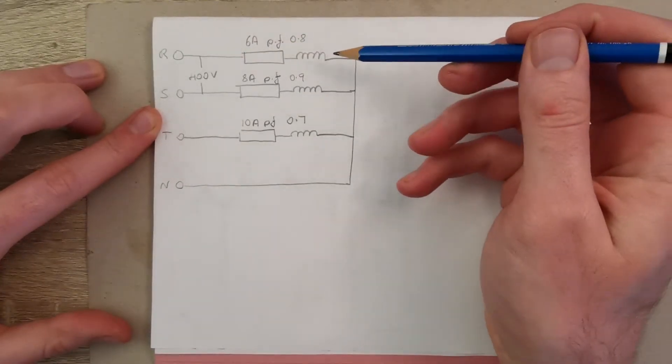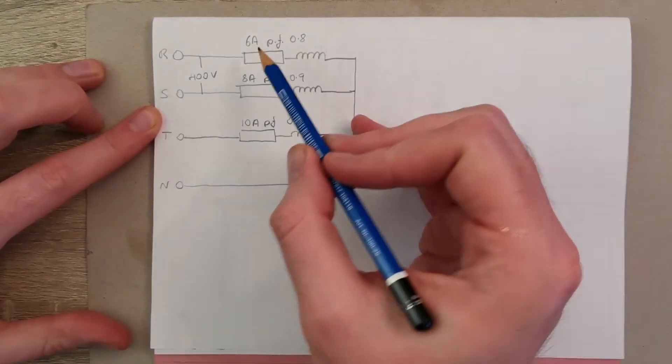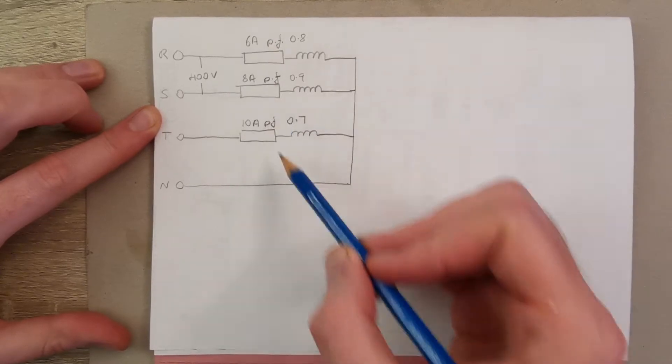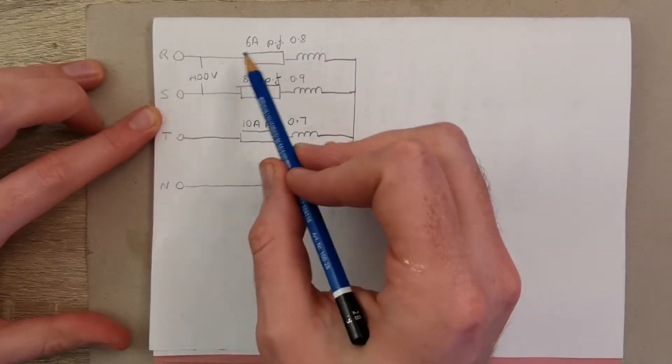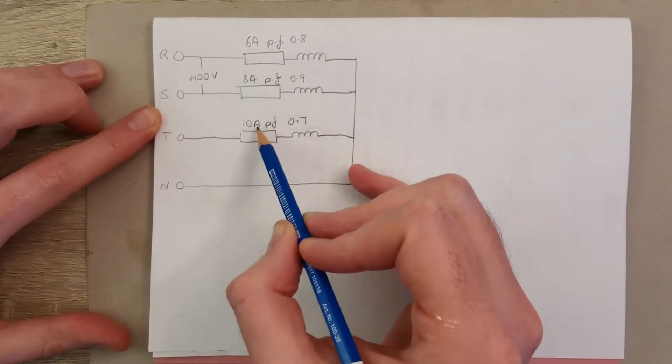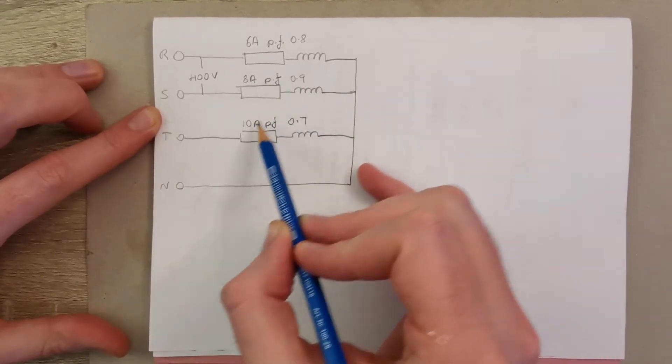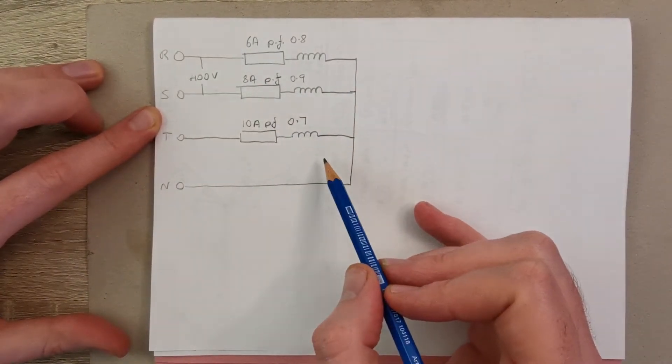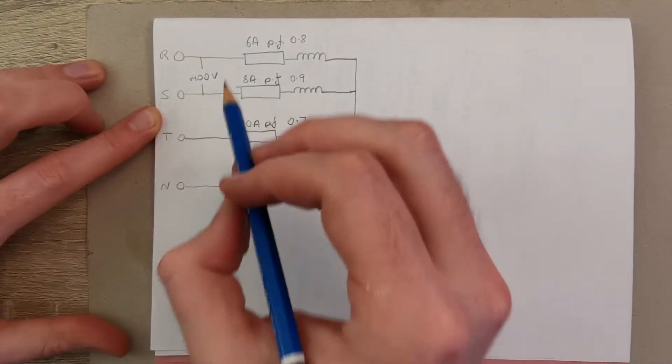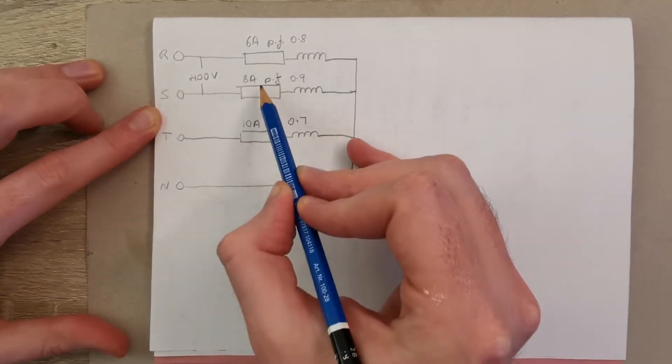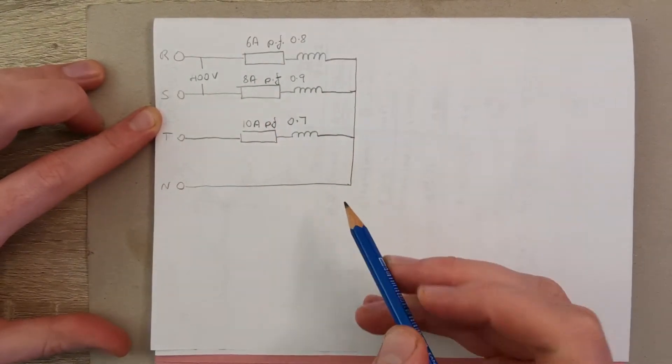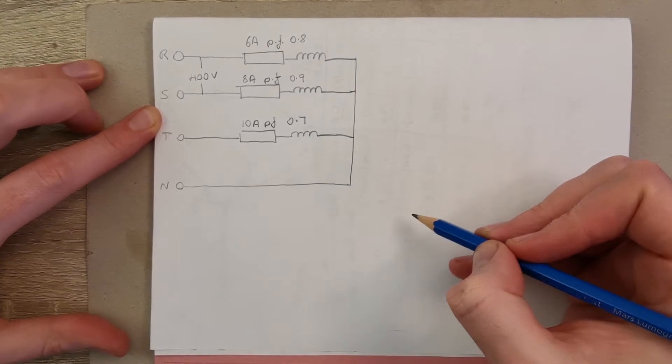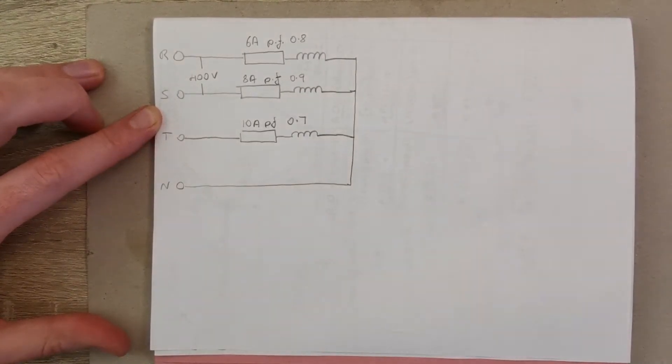So what are we going to have to do here to answer this question? Well it wants the total real power for all three phases, but as it says, this is an unbalanced load, so we have different loads flowing in each phase. So the trick here is to treat each of these individually, work out the real power for each phase, and then add them together to get the total.